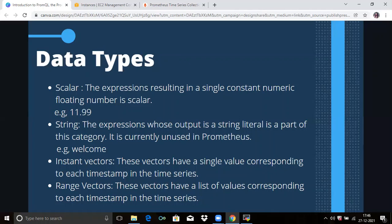Next is vectors. Vectors are just sets of time series and they include an extra dimension as compared to scalar or string, that is type. Vectors in Prometheus can be categorized into two types: instant vectors and range vectors.